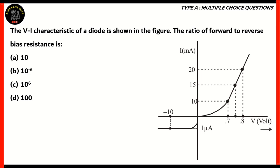Now let's look at this question. The VI characteristic of a diode is shown in the figure. The ratio of forward to reverse bias resistance is: 10, 10⁻⁶, 10⁶, or 100. To solve this question, we're given the value of the voltage and the current for a diode across its forward bias and its reverse bias. Naturally, we need to find out the resistance for forward bias and reverse bias and then divide them.